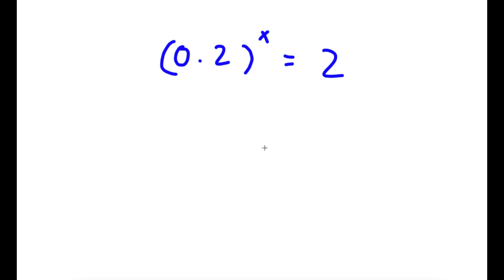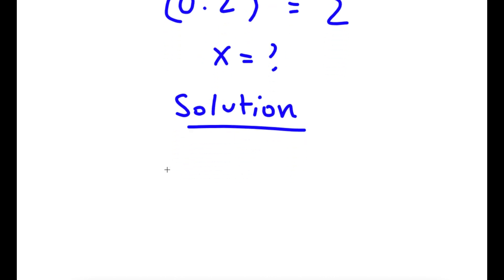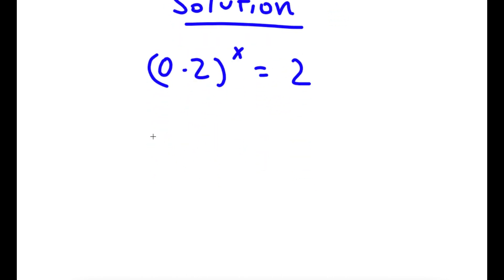In this problem, I have 0.2 to the power of x is equal to 2. I want to find the value of x. For my solution, I'll first start with 0.2 to the power of x is equal to 2. Now I'm going to take the log on both sides.